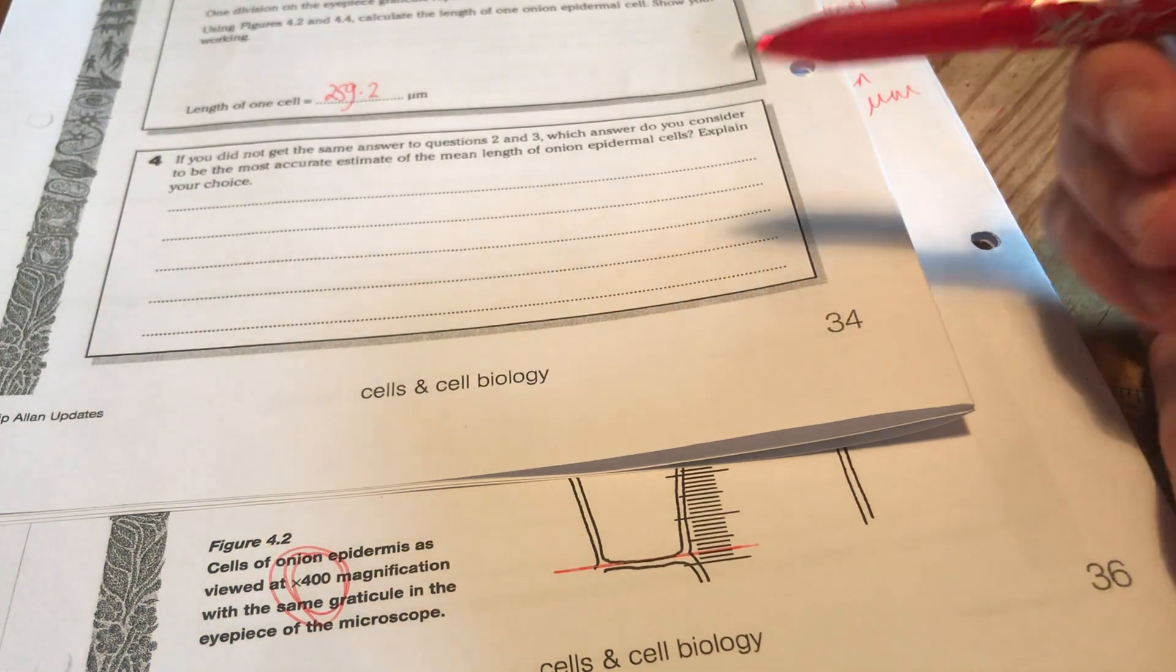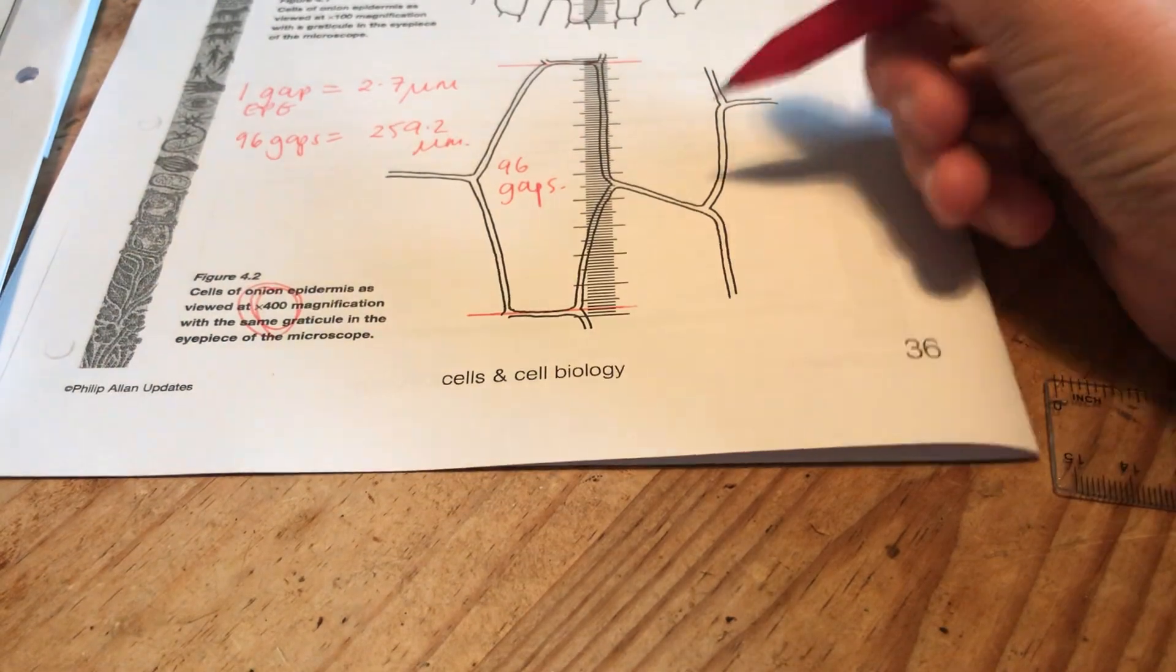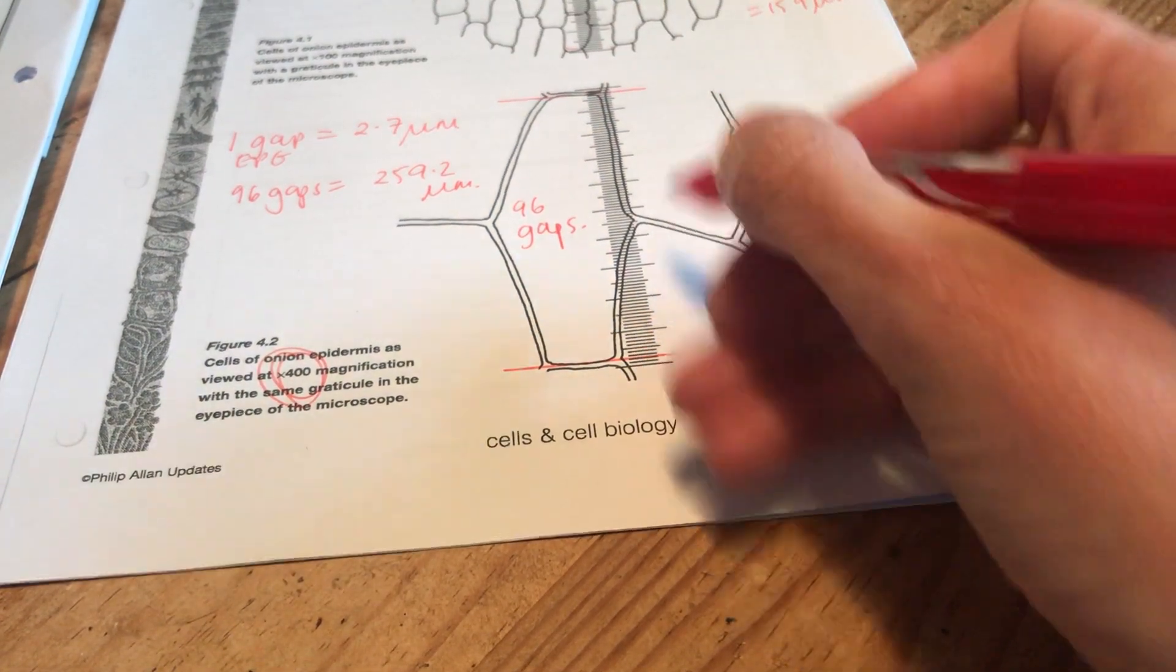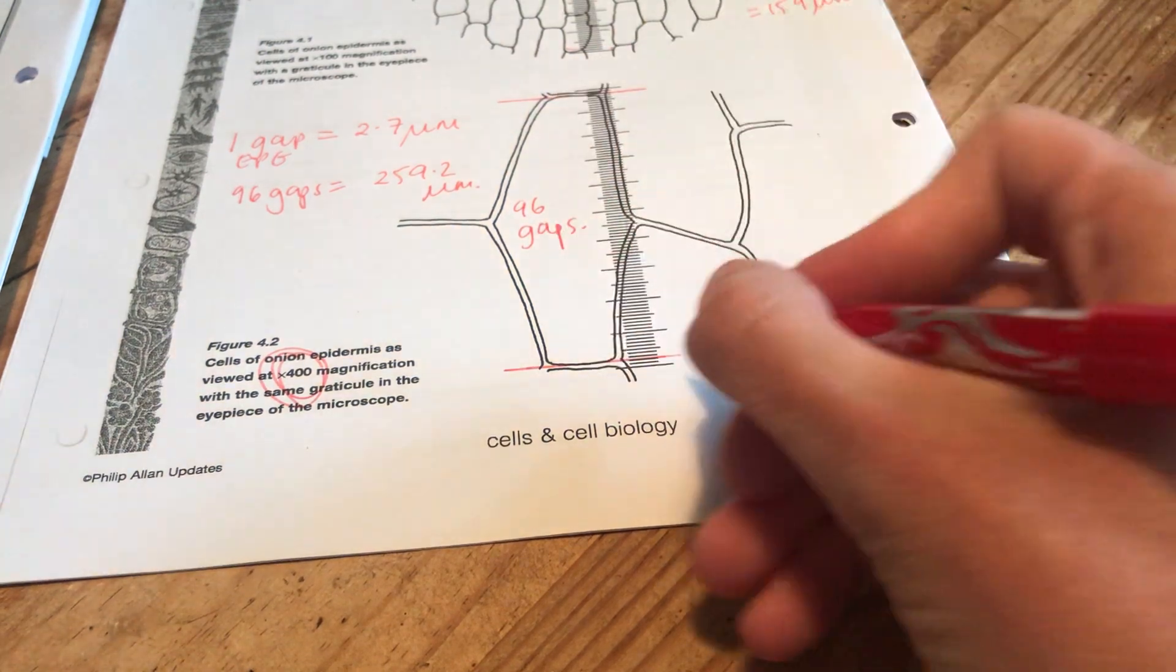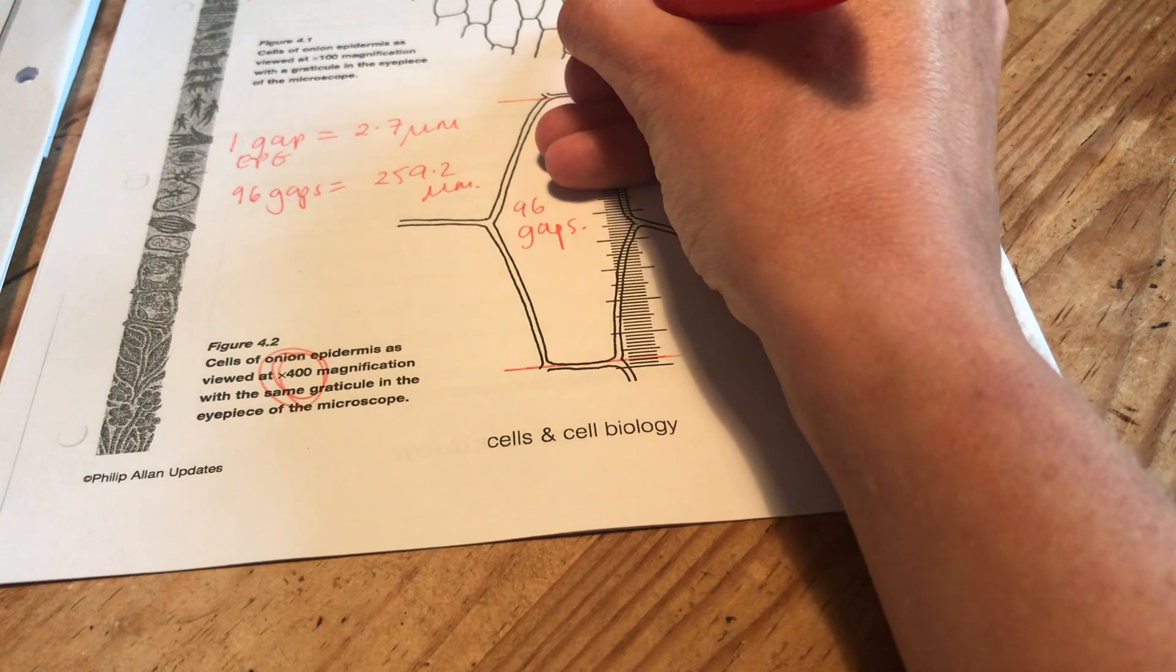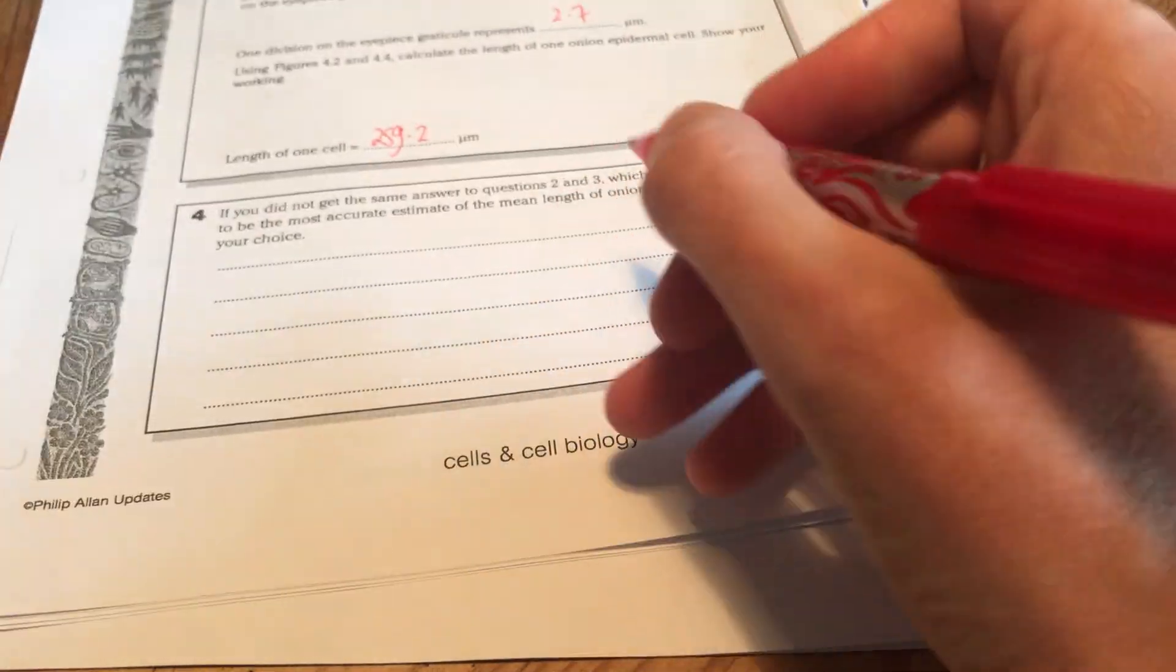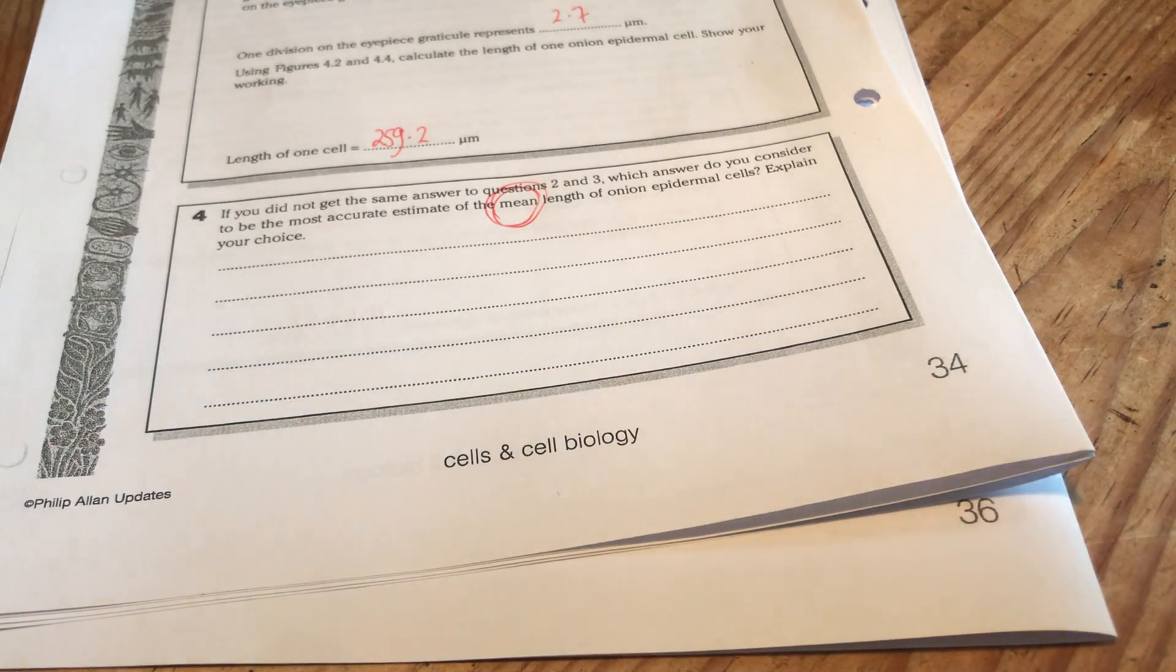We had a variety of different answers here. I completely understand what you were saying. And it's true about the fact that when you're on a higher power, you have got a little bit more control as to where you start and stop measuring. You've got a lot more detail to look at here and make a decision as to where the edge of the cell is. It's a little bit, they're all fuzzed together here in the lower magnification. However, the question says, which do you consider to be the most accurate estimate of the mean length of an onion epidermal cell?